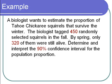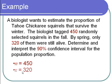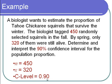Let's get our cast of characters. 450 is the sample size: n equals 450. 320 were the successful squirrels — the ones that said yes, I'm alive — so x equals 320. 90% is the confidence level, which we call C-Level in the calculator. Now let's go to the calculator and find our confidence interval.